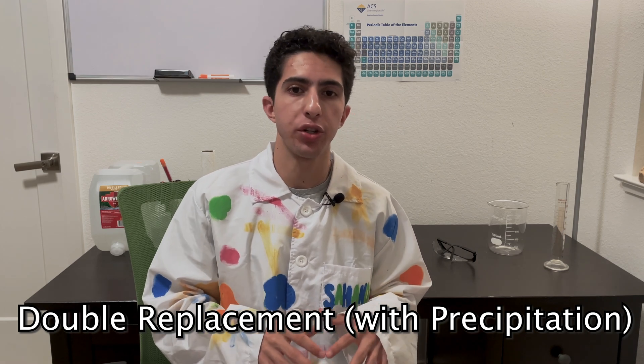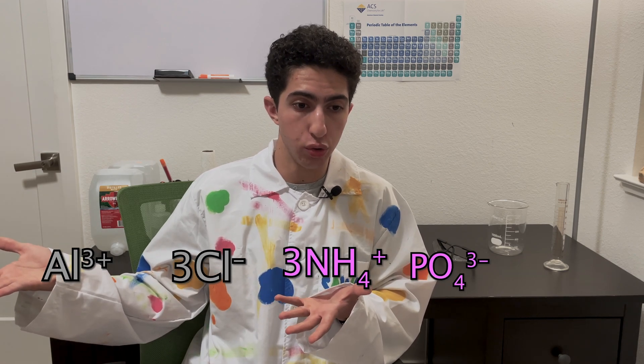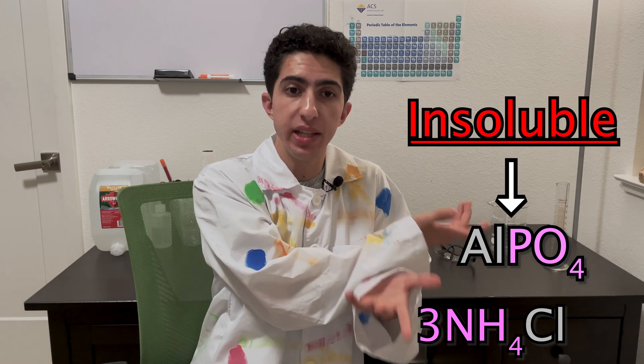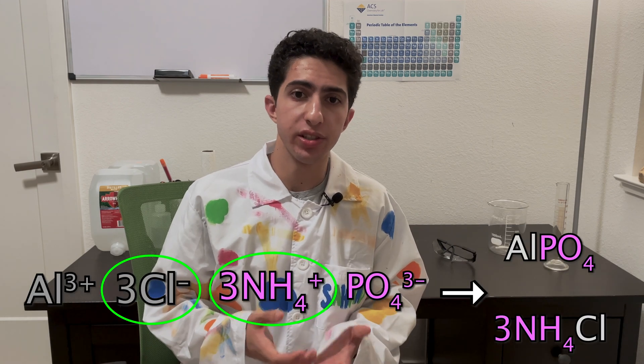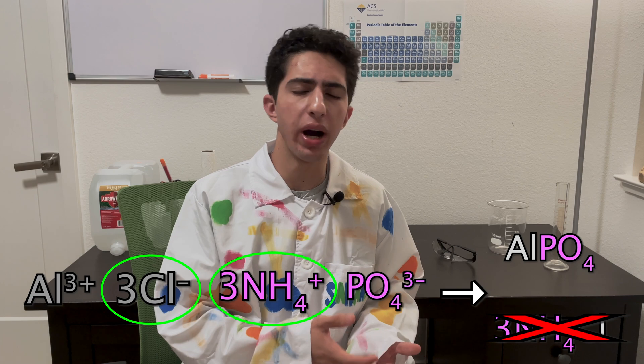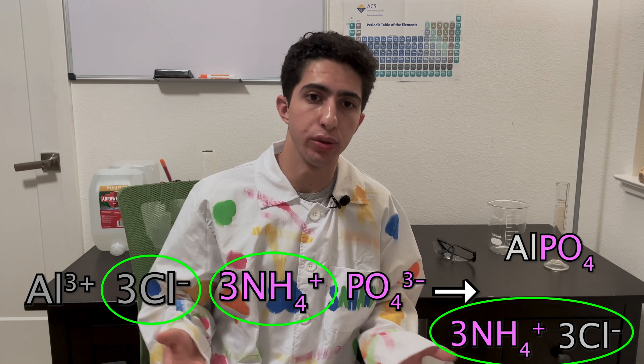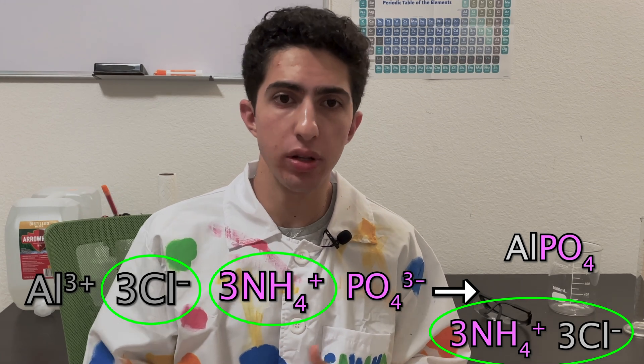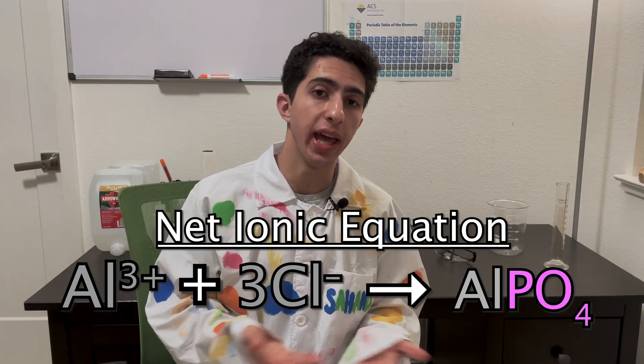The reaction occurring here is a simple double replacement precipitation reaction, where the ions introduced into the solution split up and then swap places. And it just so happens that when they swap places, an insoluble compound is formed. Really, the ammonium and chloride ions in this equation don't recombine into a new compound on the product side. They just exist as ions in solution. They're what we call spectator ions. Even after the precipitate is formed, they're still just floating around as ions, so we usually omit them from the overall equation. This gives us what we call the net ionic equation.